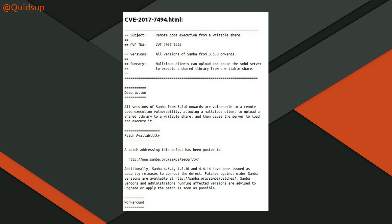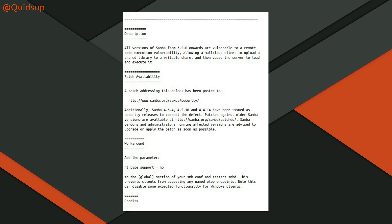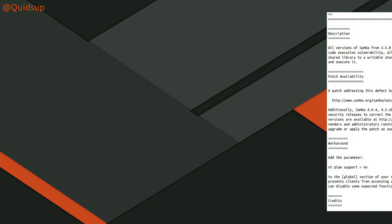There are about 600,000 internet-accessible Samba devices with port 445 open, but estimates of which are actually affected vary between 90,000 to 120,000. If you're using Samba in this method, just get your updates done as soon as you can. If you can't apply any updates, then add the config "nt pipe support = no" to the smb.conf file.